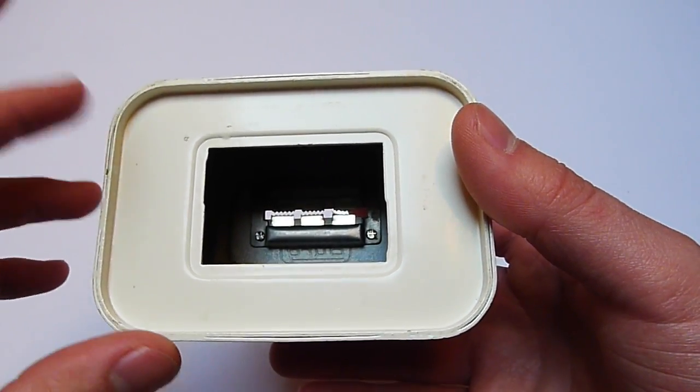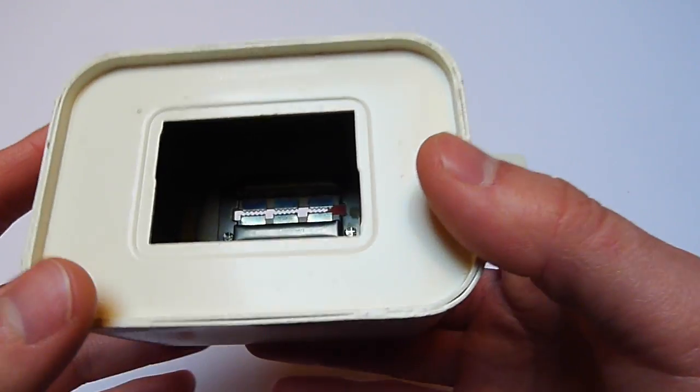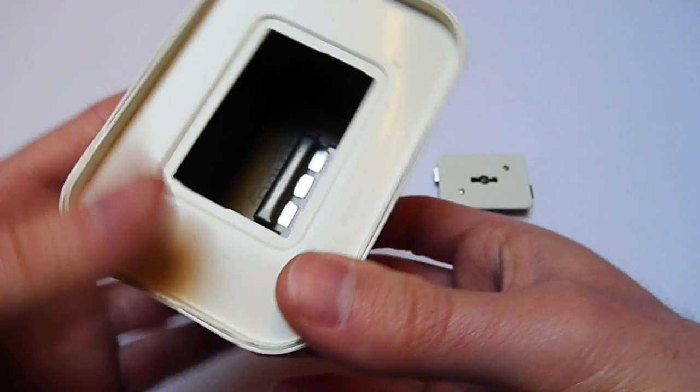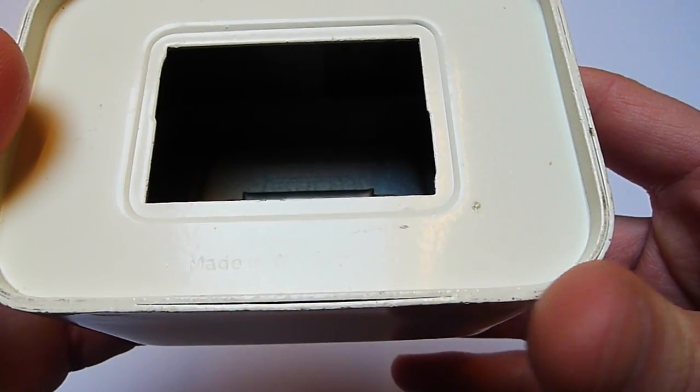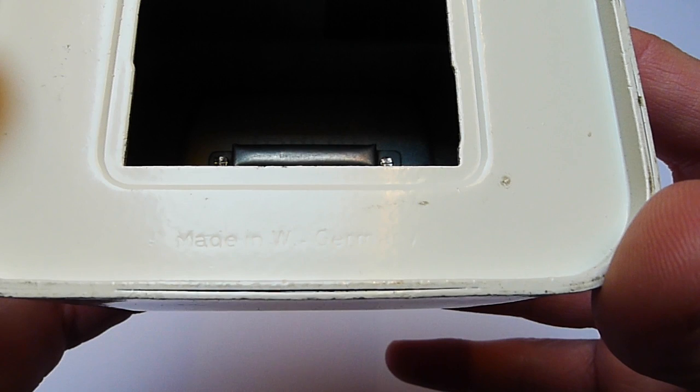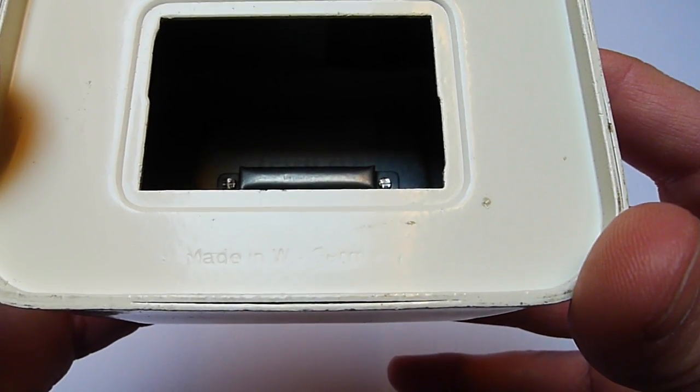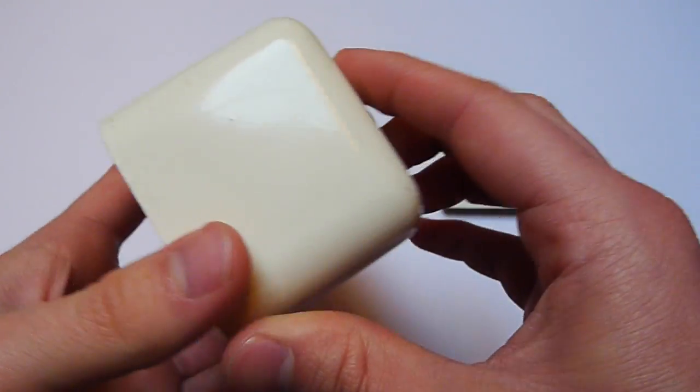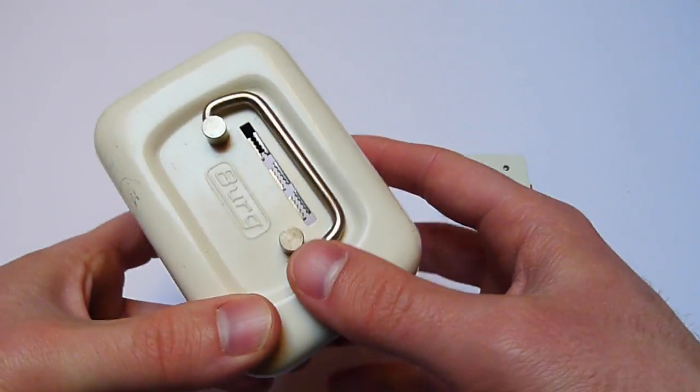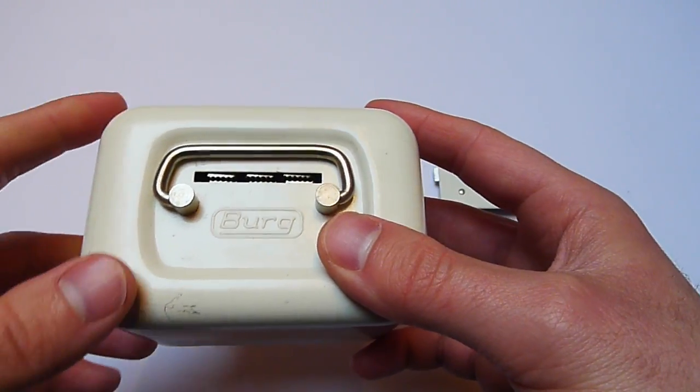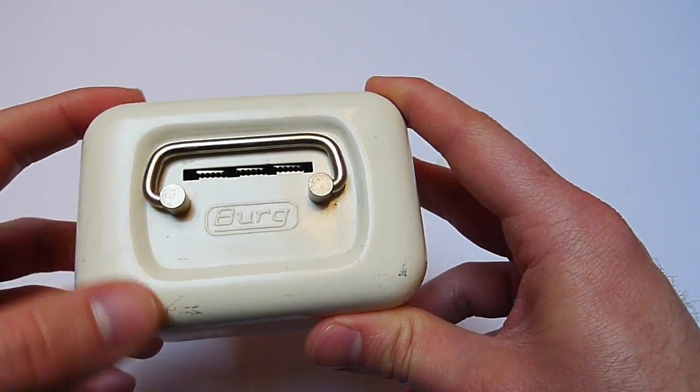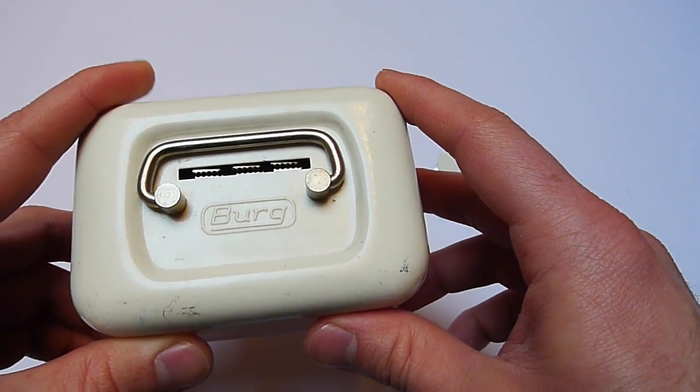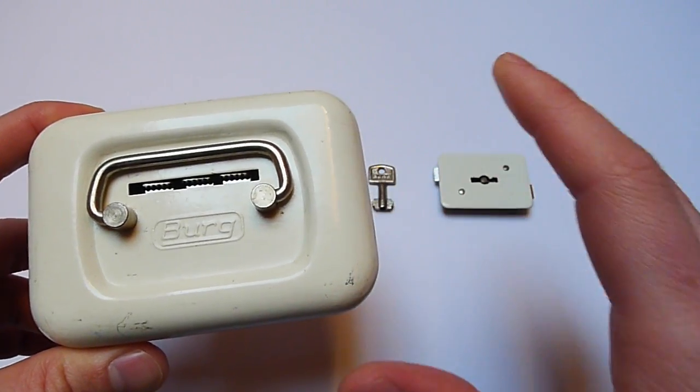Also, we got here on the other side, it says it's made in W. Germany, so this means it's made in Western Germany. This money bank or coin box has to be produced between I would say the 60s and the 90s. I would guess that it's probably made between the 70s and the 80s, but I might be wrong on that information.